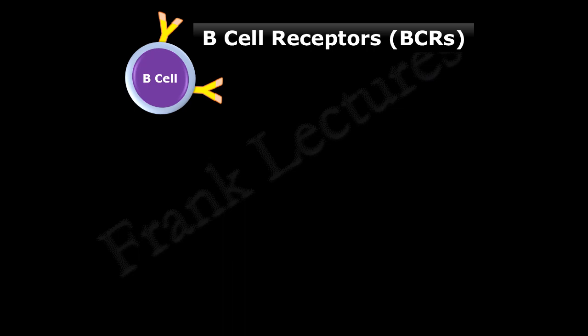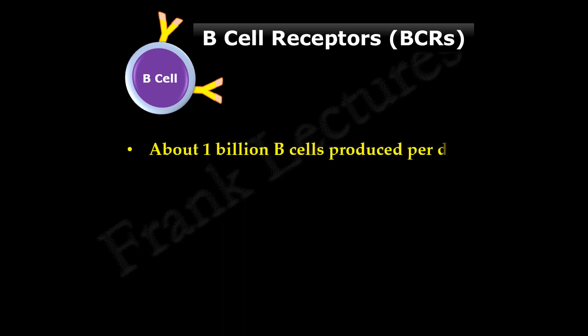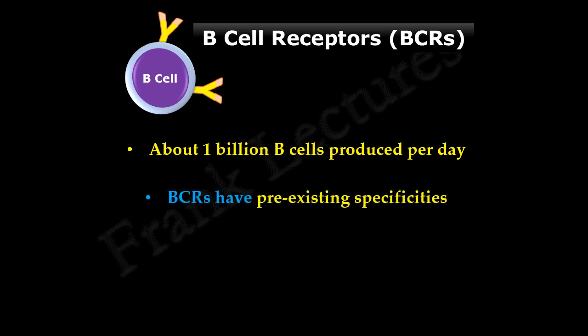Recall that B-cell receptors are membrane-bound immunoglobulins. Their structure is similar to that of antibodies. Every day about 1 billion B-cells are produced in our body. The B-cell receptors present on these cells have pre-existing specificities. Therefore, B-cells are able to recognize and react to any possible antigen which they encounter.